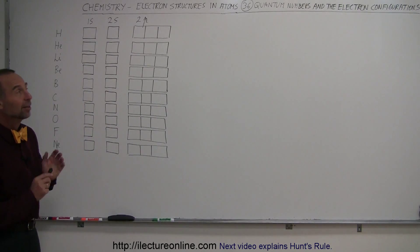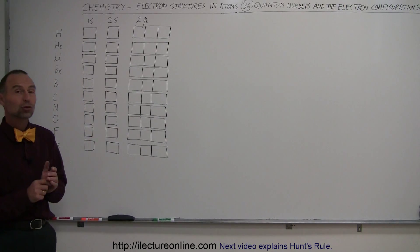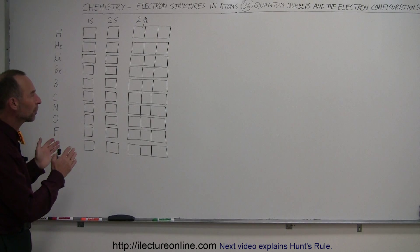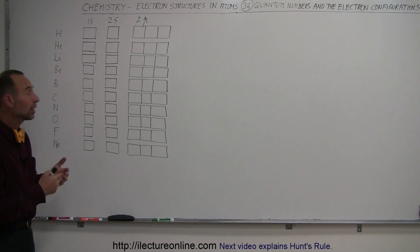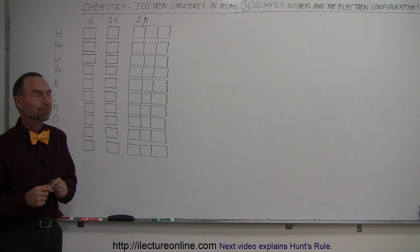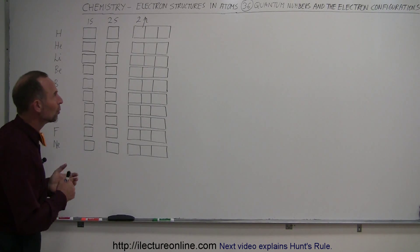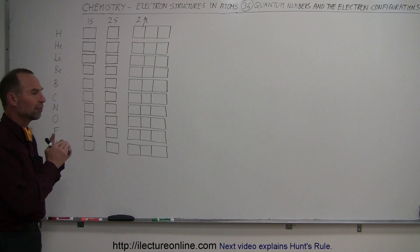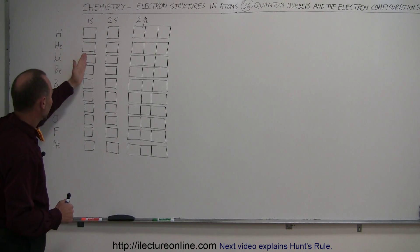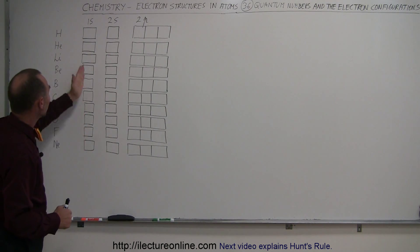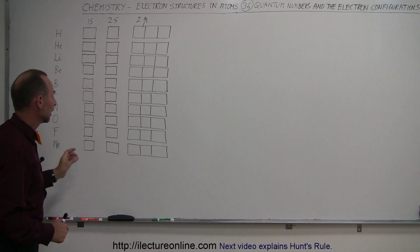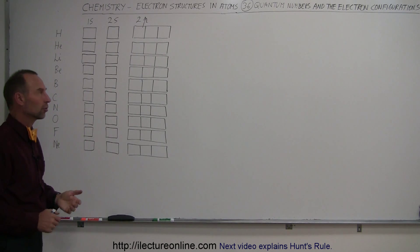Welcome to ElectronLine. In this video we're going to show you how the electrons stack up around the orbits and in the orbitals of the nuclei of the first ten atoms on the periodic table. In the first energy level we have one single S orbital — illustrated right here — which is one orbital with room for two electrons.